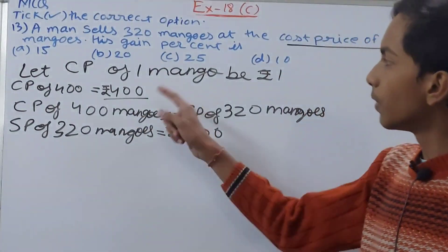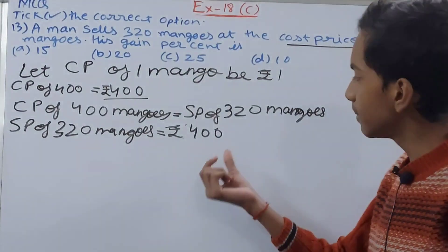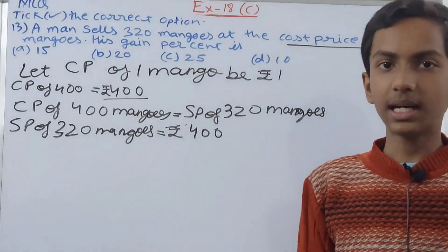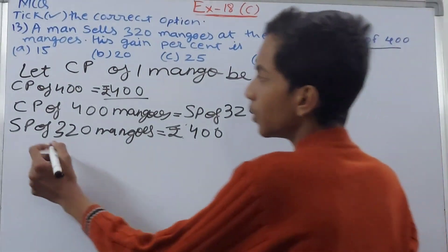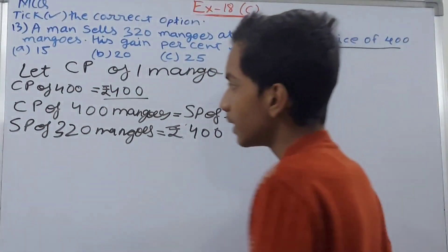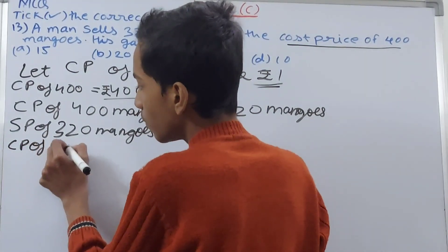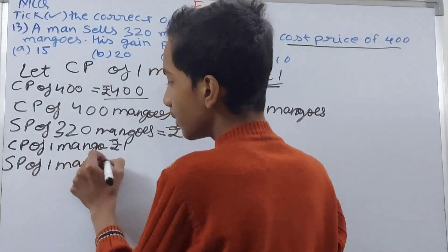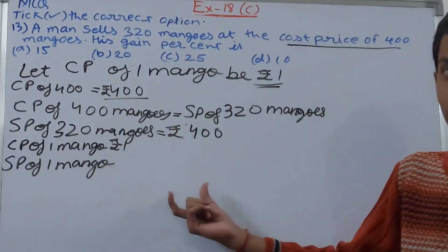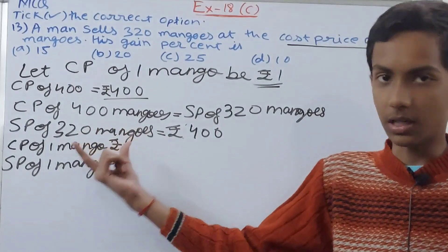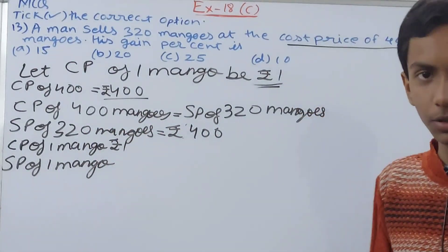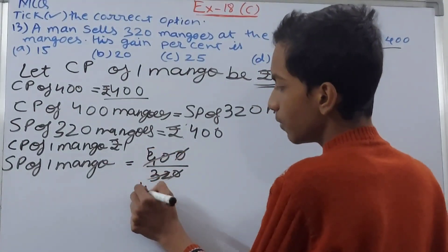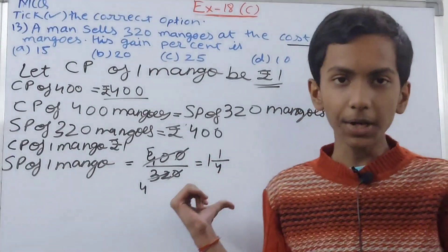Now we find the CP and SP of one mango. CP of one mango is ₹1 (already assumed). For SP of one mango, we use the unitary method: if SP of 320 mangoes = ₹400, then SP of 1 mango = 400 ÷ 320. Simplifying, this gives 1 and 1/4, which is our selling price of one mango.